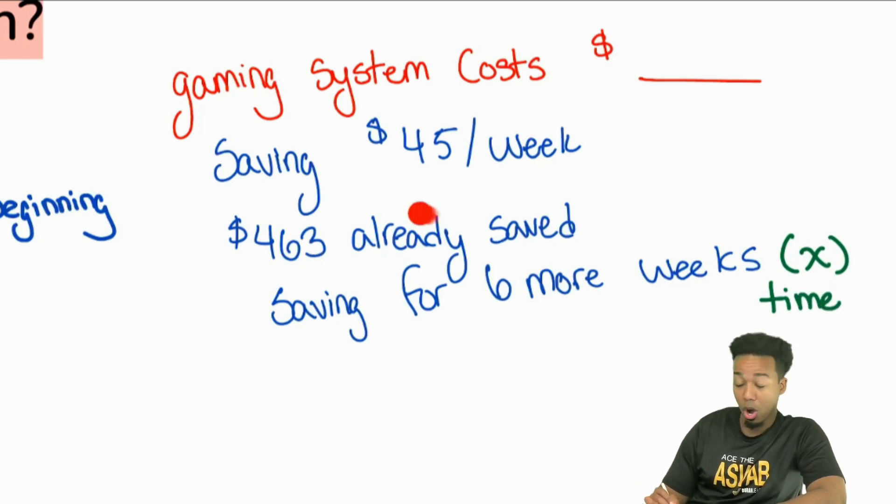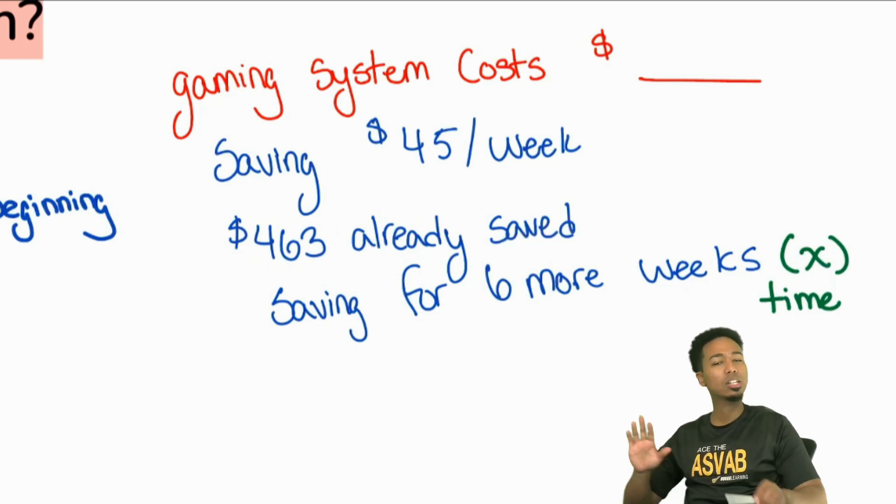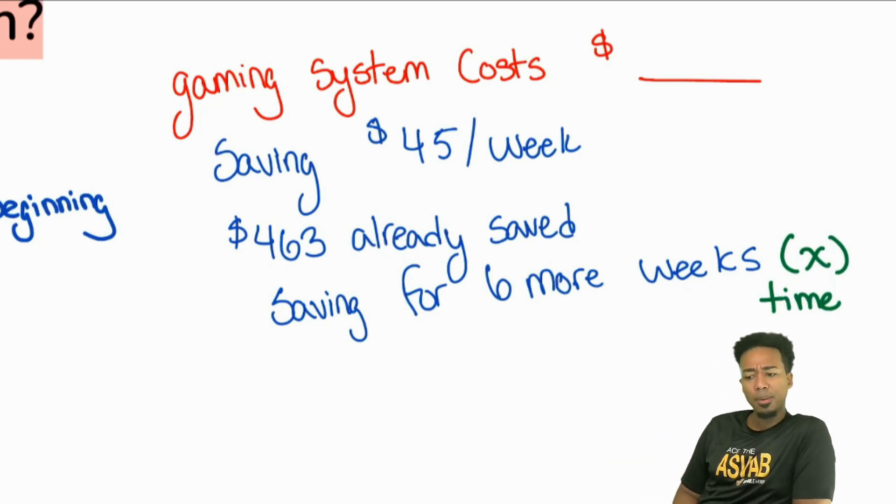$463 already saved. What would that be in English? Before we talk about the letter in English, what is that going to be? Jesse, thank you. Your beginning amount. Is that fair, everybody? $463 already saved. We had that saved from the beginning of the problem. That was there from the get-go. Right on. So we'll write that down there. That is your B amount.